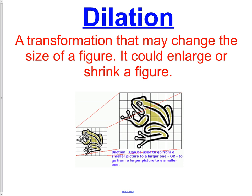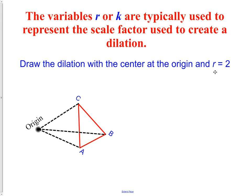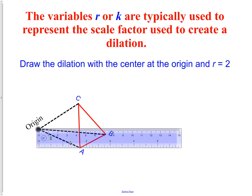A dilation is a transformation that may change the size of a figure — it could enlarge or shrink. Notice the dilation of the frog: we went from the small frog to the large frog — same characteristics, same coloring, just larger, like putting it on a photocopier and making it bigger. The variables r or k are typically used to represent the scale factor. For example, draw a dilation with the center at the origin and r equal to 2, meaning the scale factor is 2.